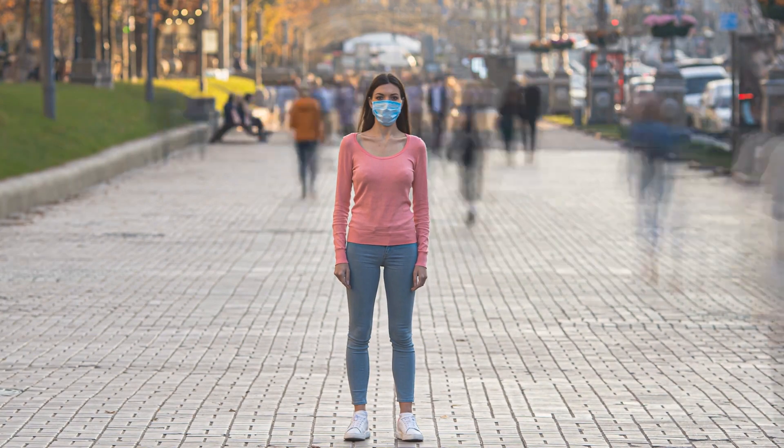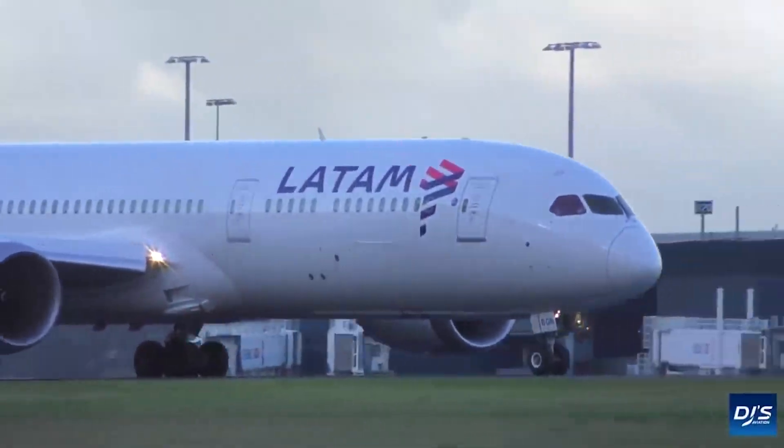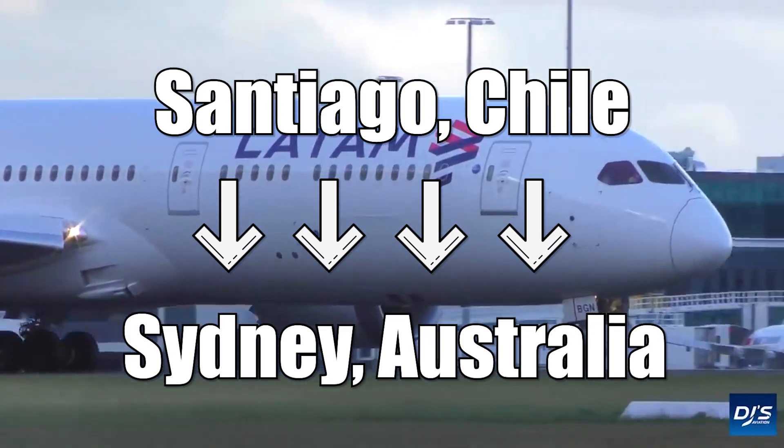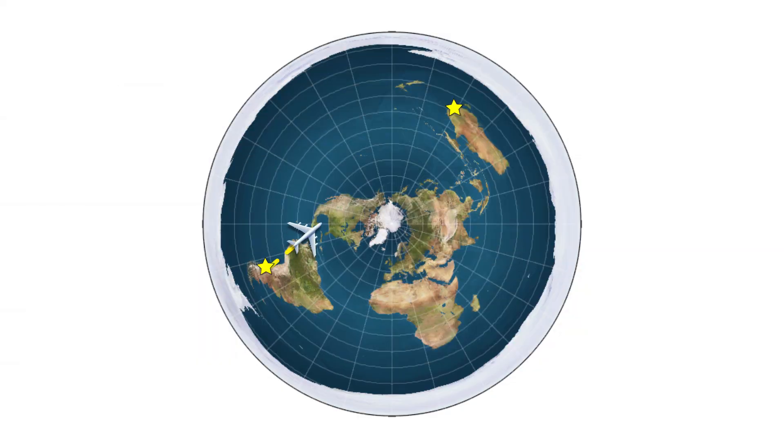When the world isn't in the midst of a global pandemic, LATAM Airlines flies four times a week from Santiago, Chile to Sydney, Australia. On a flat Earth, the quickest route would be a straight line, sending you over South America, North America, and across the Pacific, but is that really how this route flies?